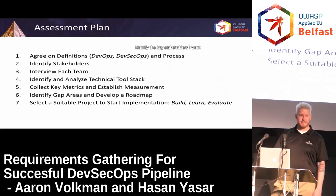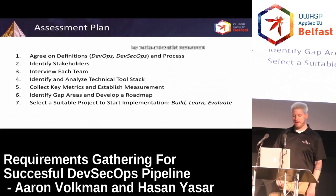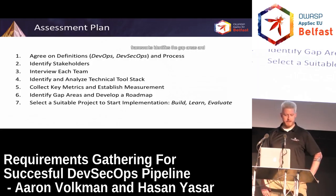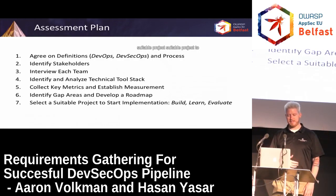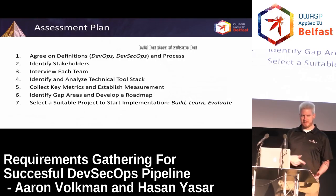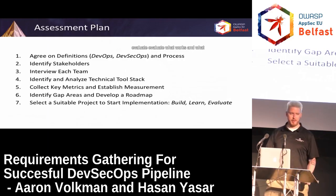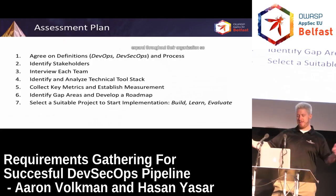Next step: identify the key stakeholders. Conduct interviews of each team. Identify and analyze their current technical tool stack. Collect key metrics and establish measurement frameworks. Identify the gap areas and develop a road map on how to get to their nirvana state. Then select the suitable project to start implementation with — build that piece of software, learn from it, and evaluate what works and what doesn't so they can expand throughout their organization.